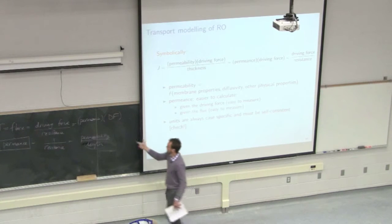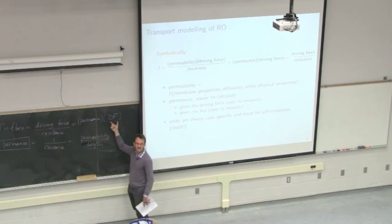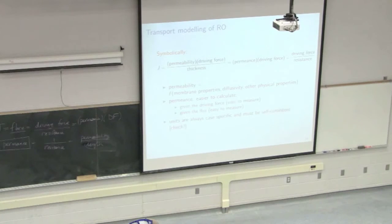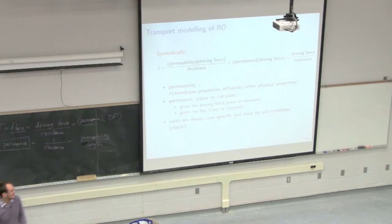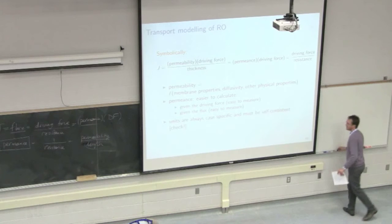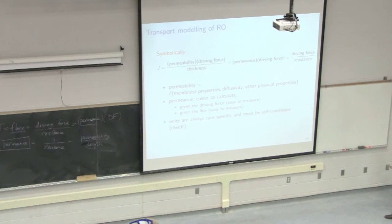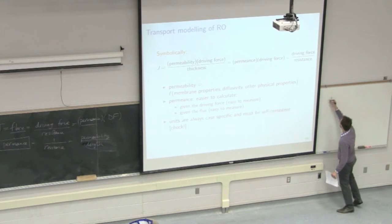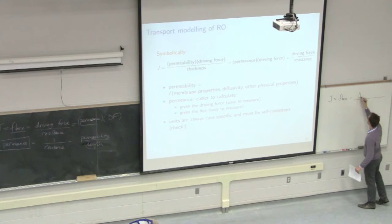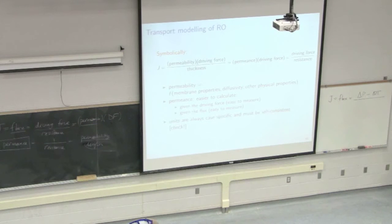Rewriting the equation, flux equals permeance times driving force (abbreviated DF). The driving force — your osmotic pressure difference, delta p — is easy to measure with sensors or lab instruments. The flux is simply the volume of permeate per meter squared per unit time, also very easy to measure. From those two quantities we can then calculate the permeance. That's how it's typically done, and the case studies we'll use today will apply that idea.